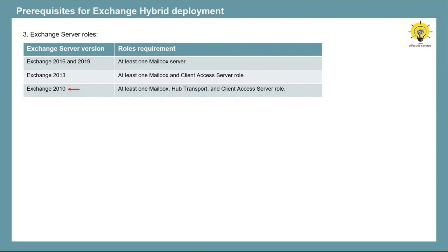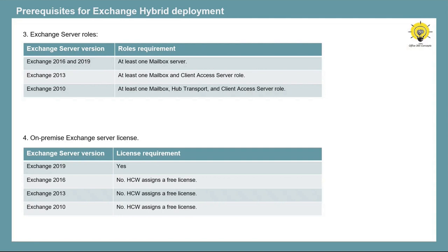If you have an Edge Transport Server installed in your on-premise, that server also has to be running on the latest cumulative updates. The next prerequisite is you need to assign a license to your on-premise Exchange Server before you run the Hybrid Configuration Wizard. For Exchange 2010, 2013, or 2016, HCW will assign a free license automatically. But HCW cannot assign a free license to Exchange 2019, so you need to assign a license manually before running HCW.